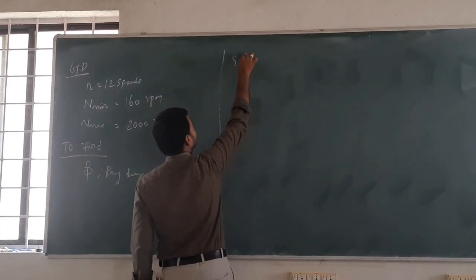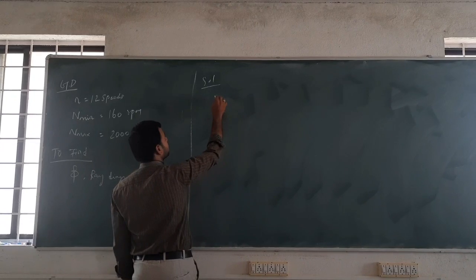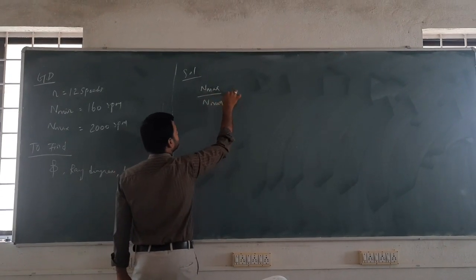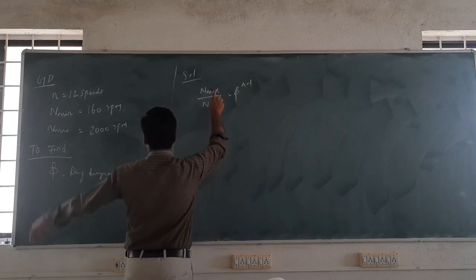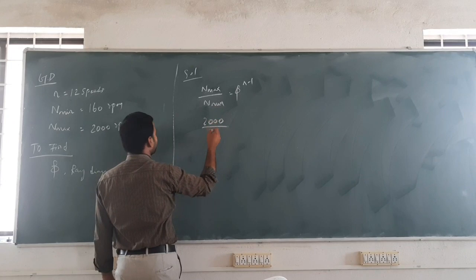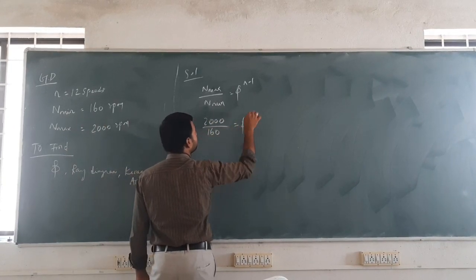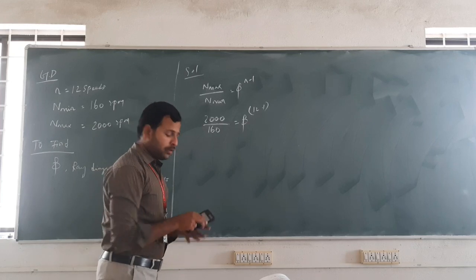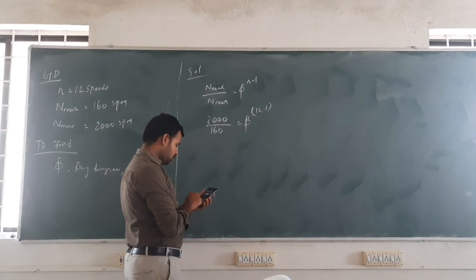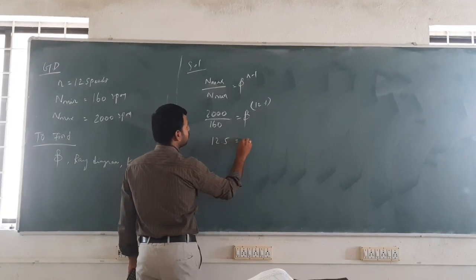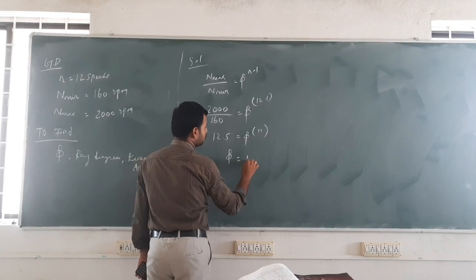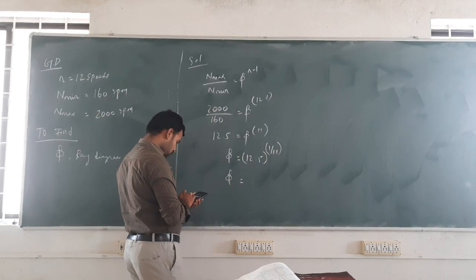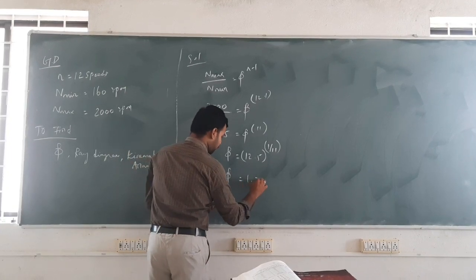We already know how to calculate the speed reduction. n maximum divided by n minimum equals psi to the power of n minus 1. So n maximum is 2000, n minimum is 160, number of speeds is 12. So 2000 divided by 160 equals 12.5, equals psi to the power of 11. Therefore psi equals 12.5 to the power of 1 over 11. Finally, psi becomes 1.25.